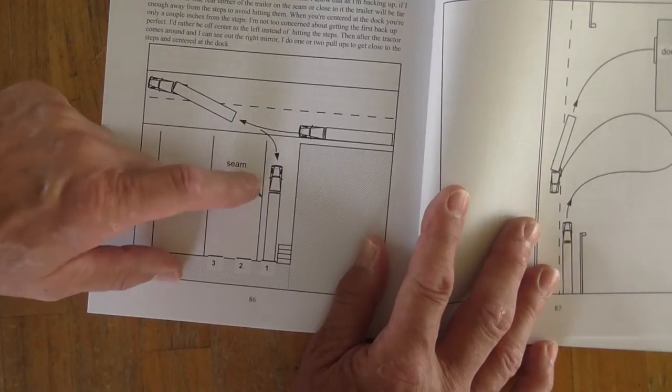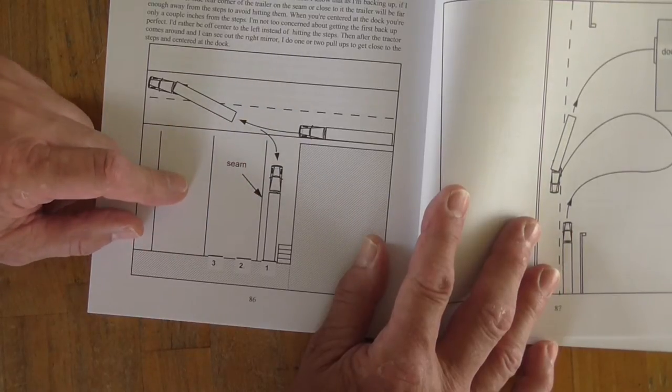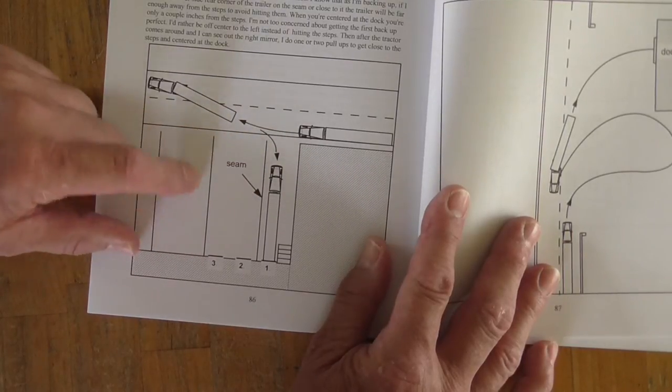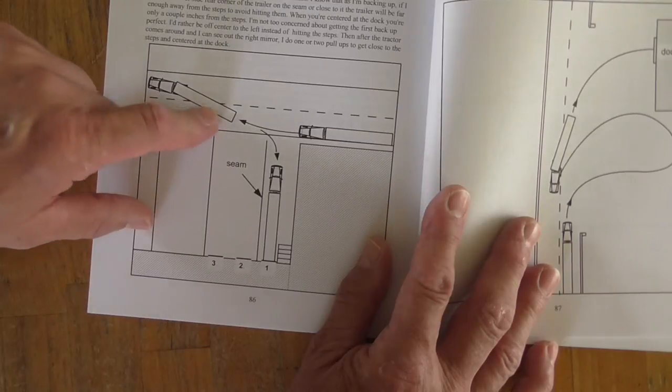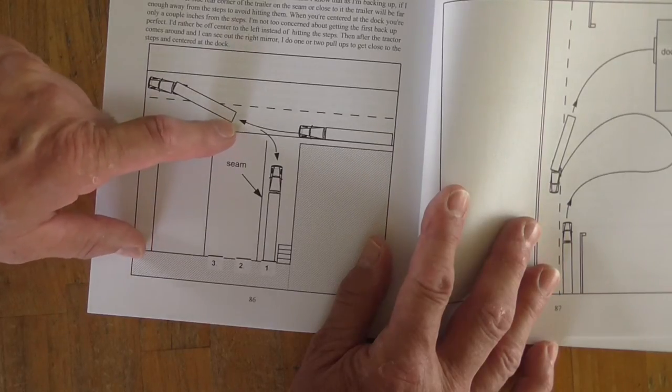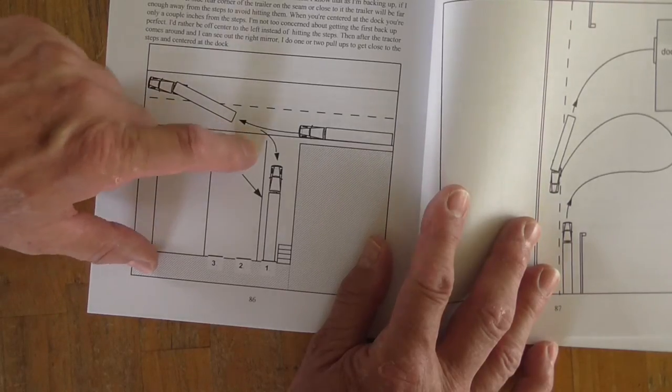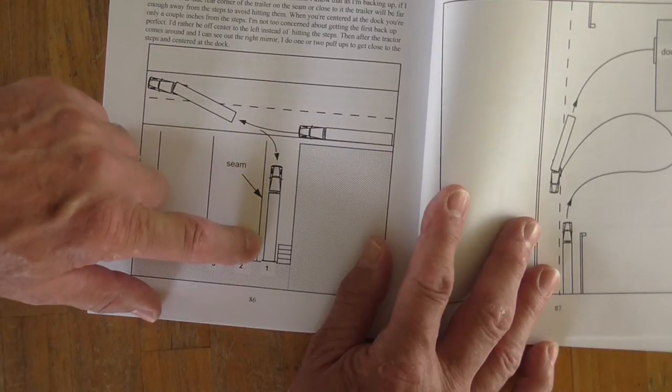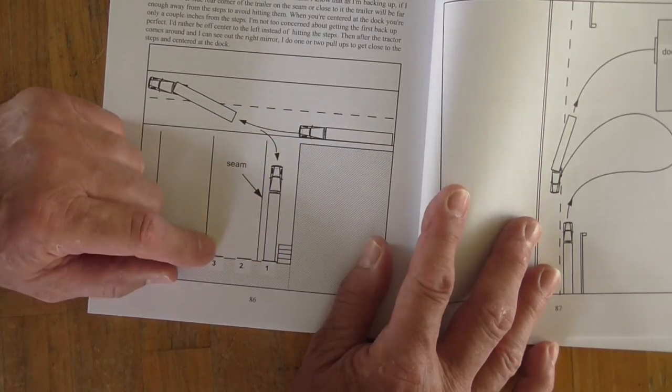And this one here, they have concrete slabs in the parking lot. In between each slab, there's a seam. So as I'm backing up, I know if I keep this corner of the trailer close to that seam, I'll be far enough away from those steps.